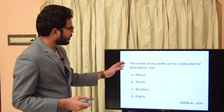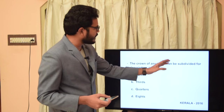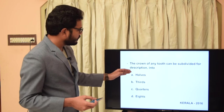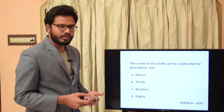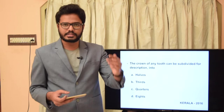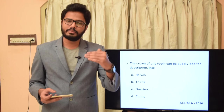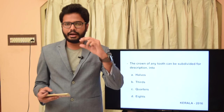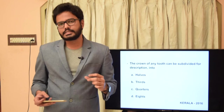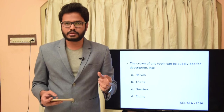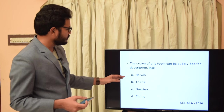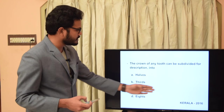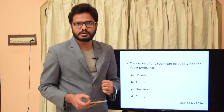The crown of any tooth can be subdivided for description into halves, thirds, quarters, or eighths. We can divide the surface of a crown — for example the labial surface — into cervical third, middle third, and incisal or occlusal third. So the answer is thirds. Asked in Kerala 2016.